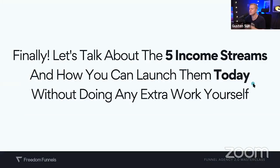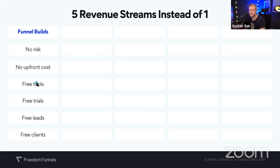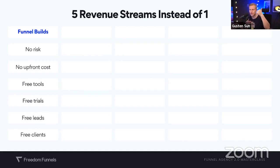Let's talk about the five income streams and how you can launch them today without any additional work. Funnel builds: no risk, no upfront cost, free tools. The only thing you need is a landing page software, but there's Canva free, Google Drive, Google Forms for the automated form — illustrations, icons, logos — everything you can find free online. There are also free trials for ClickFunnels or whatever page builder you want. Free leads from Facebook, free clients via DMs. There are three client deal types that will get you to $12,500 per month fast, even if you don't have a team to fulfill yet.